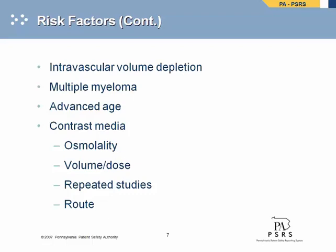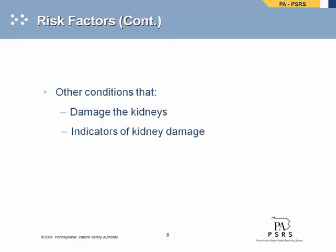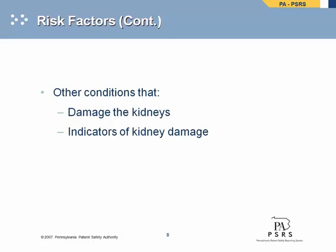CIN risk increases when high-risk patients receive multiple injections of contrast within a short period. Intraarterial administration of contrast media poses a greater risk of CIN than intravenous administration. Conditions that damage kidneys increase the risk of CIN, such as sepsis, in which bacterial toxins and circulatory impairment can cause direct damage to renal tubules. Other conditions may be indicators of renal damage, such as a solitary kidney, history of structural kidney disease, or albuminuria. Coronary angiography followed by bypass graft intervention and percutaneous coronary interventions have been associated with CIN. The incidence of CIN and the need for dialysis is greater when multiple risk factors are present.